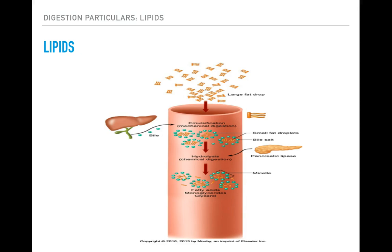The process of lipid digestion begins with large fat droplets. These fat droplets are broken down because of input from the liver, which secretes bile, and pancreatic lipase, an enzyme from the pancreas. Through the process of hydrolysis, these lipid droplets are then broken down into their simplest form, known as fatty acids.